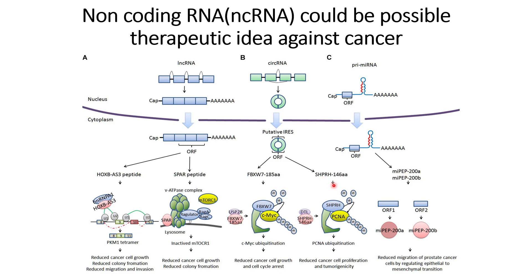The SHPRH protein interacts with and stabilizes PCNA, and also causes PCNA ubiquitination, thereby preventing proteins from maturation by diverting them towards ubiquitination. This also results in reducing cancer cell proliferation and reducing the tumorigenicity of cancer cells.